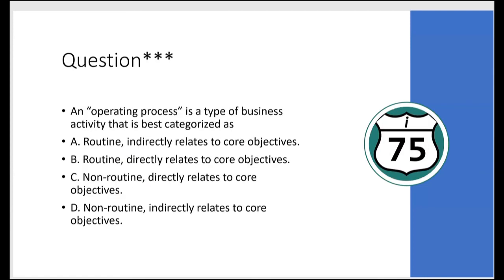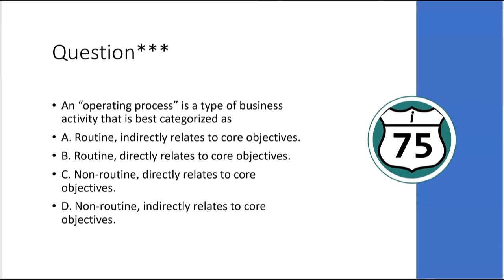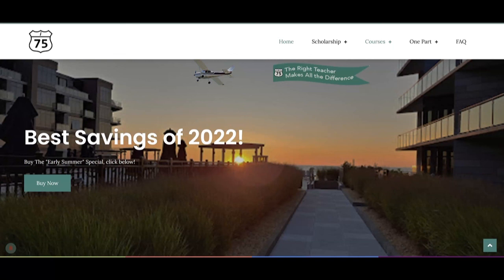How about this one: an operating process is a type of business activity that is best categorized as — if you think you know the answer, leave it in the comments section. Don't forget to like and subscribe — it helps the channel out a lot. If you want to learn more about business processes for the BEC exam, go to cpaexamtutoring.com and get yourself on I-75, where the right teacher makes all the difference.